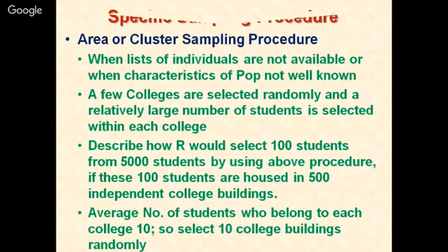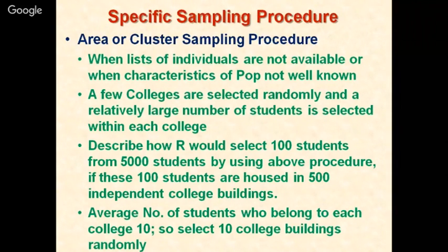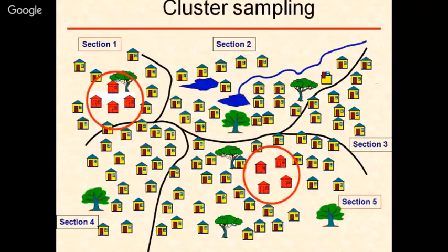For area cluster sampling procedure, when lists of individuals are not available or characteristics of the population are not known, a few colleges are selected randomly and a relatively large number of students is selected within each college. For example, to select 100 students from 5,000 housed in 500 independent college buildings, with 10 students per building: randomly select 10 college buildings, then include all students within those selected buildings. This is how cluster sampling proceeds — first dividing the population into different cities or districts.